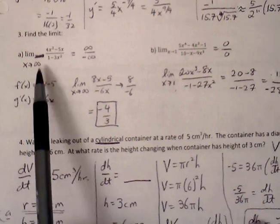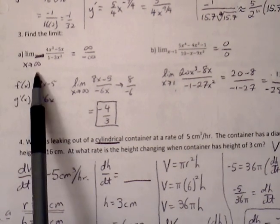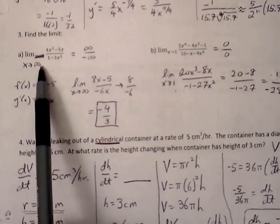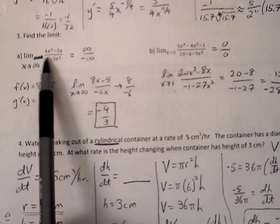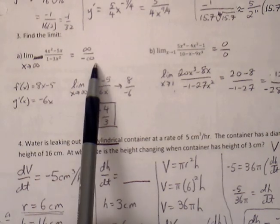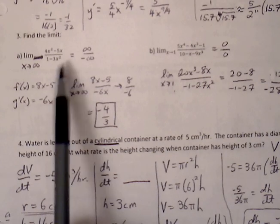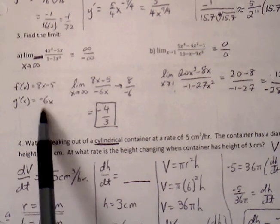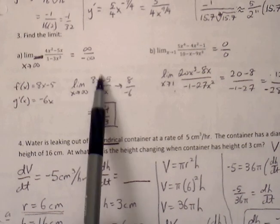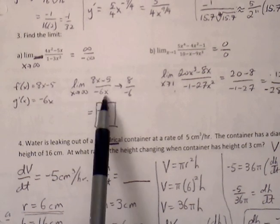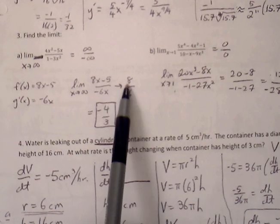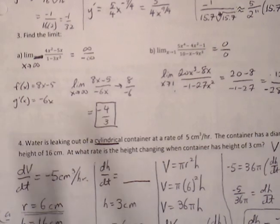X approaching infinity here, we can plug in a large infinity value so we get positive infinity over negative infinity which is indeterminate form which allows us to find the derivative of numerator and denominator. So we get 8x minus 5 over negative 6x. If that's the case if we plug infinity again we'll still get positive over negative infinity, so we find the derivative yet once again and we get 8 over negative 6 and that reduces to be negative 4/3.